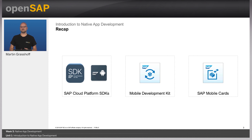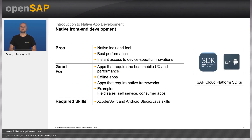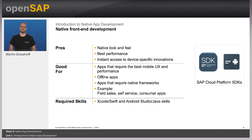But be sure that the iOS SDK plays a vital role here as well. Native front-end development brings a lot of advantages: the best look and feel, the native look and feel, meaning users directly feel at home. We also have access to the best possible performance the device can offer, and instant access to new device innovations. This makes native app development very good for providing the best user experience, but also for offline applications used by workers in the field throughout the day. When your app requires a native framework, it's much easier if you do native app development.